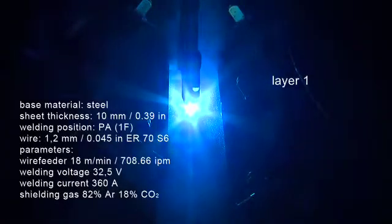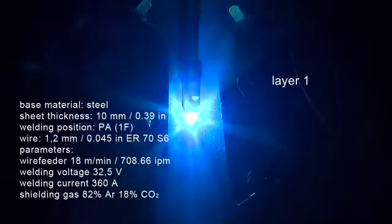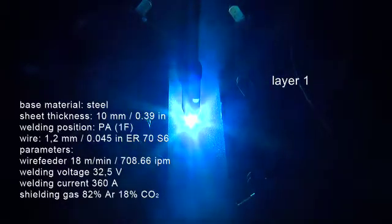The Transteel 5000 is paired with the AW7000, a torch with a two-circuit cooling system, to create a system that intermeshes right down to the last detail.